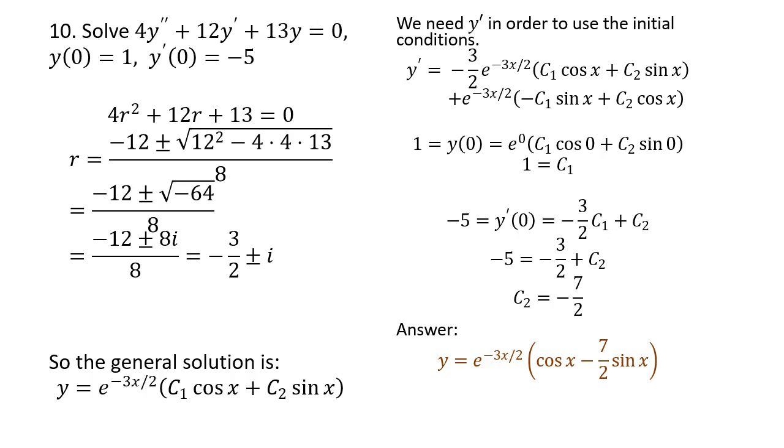Next question: number 10. Solve 4y double prime plus 12y prime plus 13y equal to zero, a constant coefficient second order differential equation with this initial condition. We have to solve the characteristic equation. So 4, 12, and 13 here. In order to solve this you should use the quadratic formula. Hopefully you remember the quadratic formula: negative b plus minus square root of b squared minus 4ac over 2a.